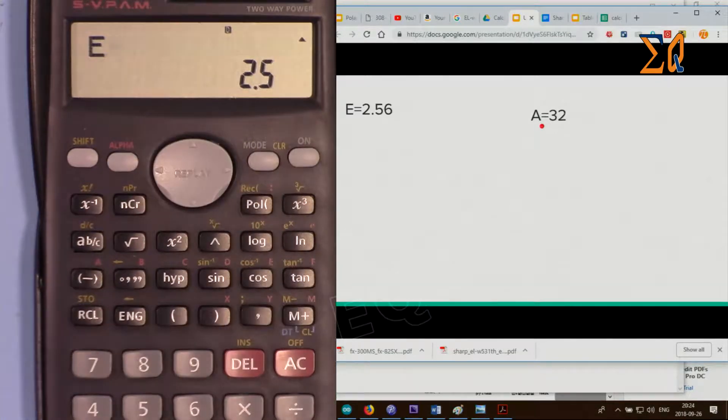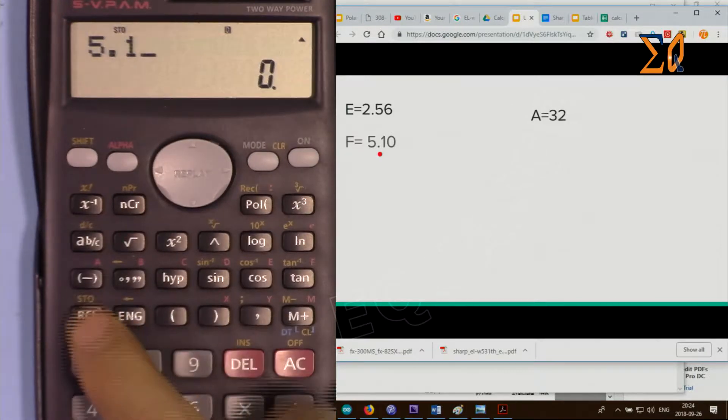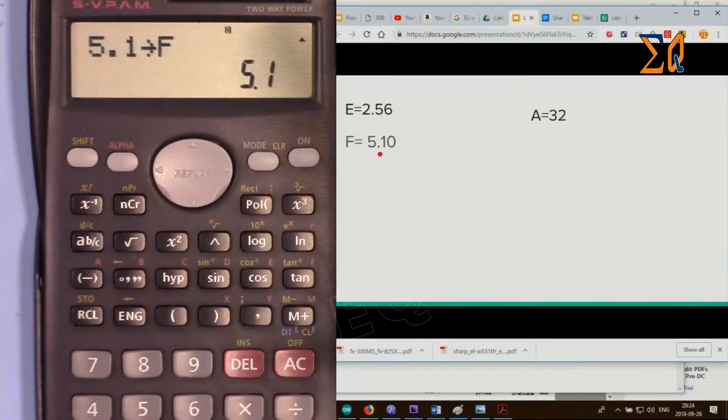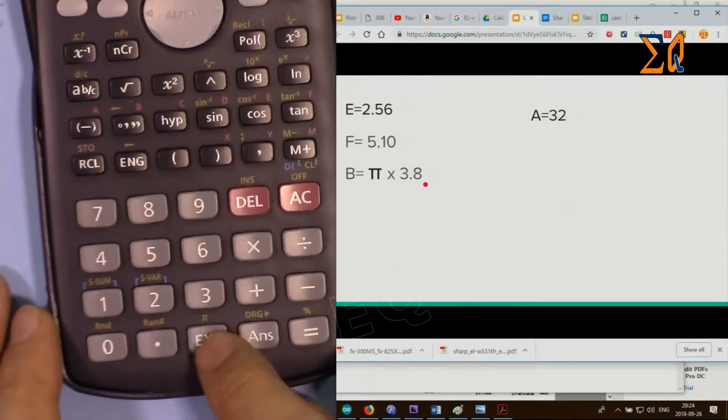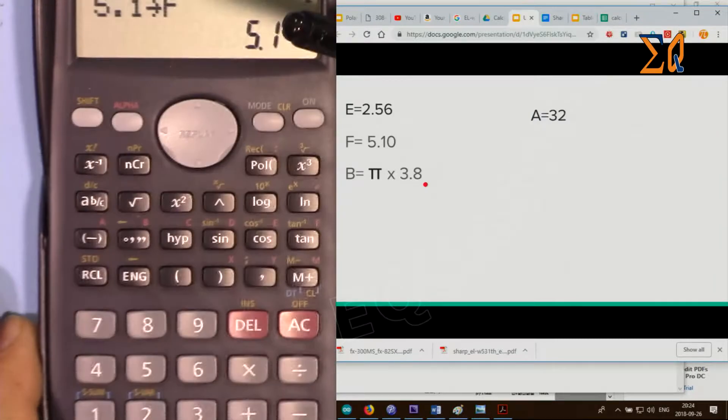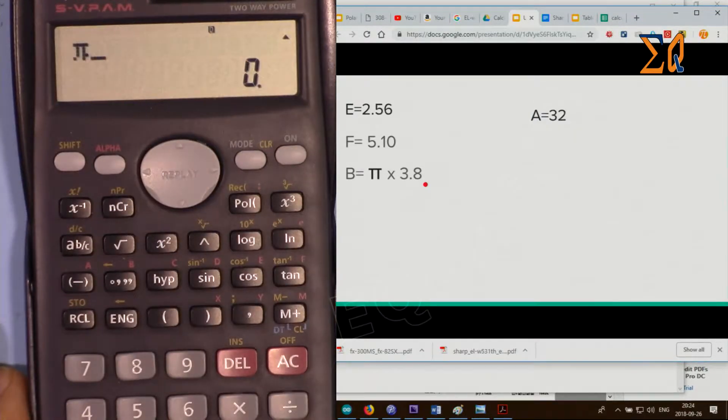Or you can say recall E, go with the left arrow, and you can enter some other value. Now let's store 5 times 5.1 into F. Enter 5.1, second function shift F, that's into F.